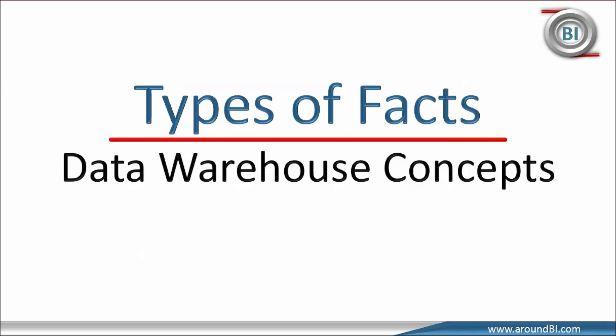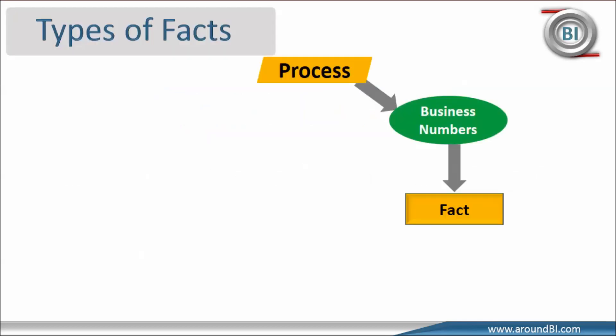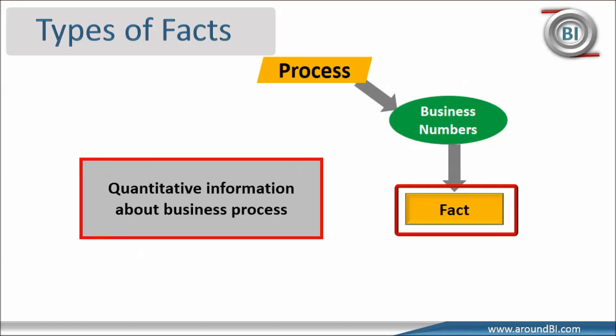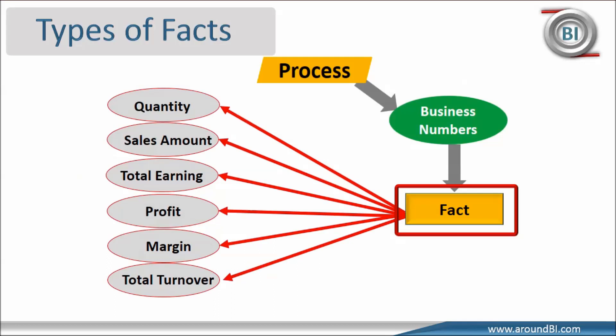Welcome to Around BI. In this tutorial, we will walk through different types of facts. In a previous tutorial on dimension and fact, we had talked about definitions and got the idea that a fact is a numeric entity that tells about business numbers. We dove into our retail sales business process example and got acquainted with some facts. Now let's use the same example to understand what the different types of facts are.